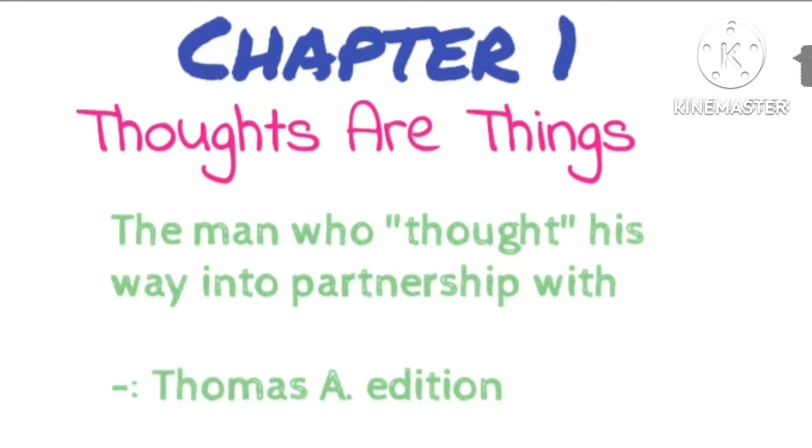The first car of ore was mined and shipped to a smelter. The returns proved they had one of the richest mines in Colorado. A few more cars of that ore would clear the debt. Then would come the big killing in profits. Down went the drills, up went the hopes of Darby and uncle. Then something happened: the vein of gold ore disappeared. They had come to the end of the rainbow, and the pot of gold was no longer there.